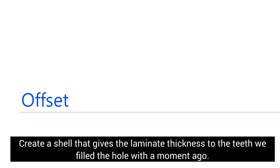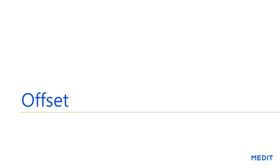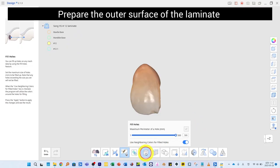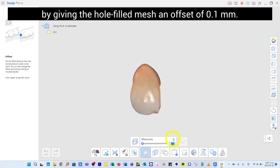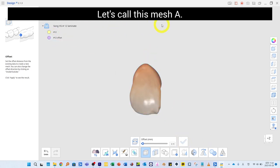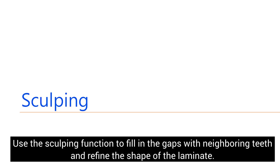Create a shell that gives the laminate thickness to the tooth mesh we filled the hole in. Prepare the outer surface of the laminate by giving the hole-filled mesh an offset of 0.1 millimeter — call this mesh A. Use the Sculpting function to fill in the gaps with neighboring teeth and refine the shape of the laminate.